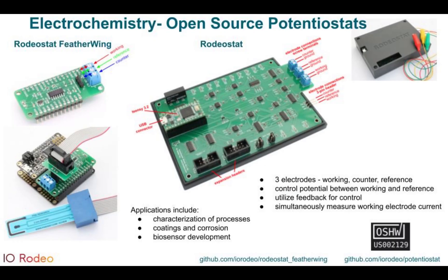On this slide, you can see two of our open source potentiostats: the Rodeostat in the center, and the Rodeostat Featherwing on the left-hand side. The Rodeostat Featherwing is a small, low-cost development board style potentiostat, which is designed to accompany a development board — it's not really meant to be a standalone system — and is used if you want to add a potentiostat to an embedded project. In the center is our Rodeostat Potentiostat.